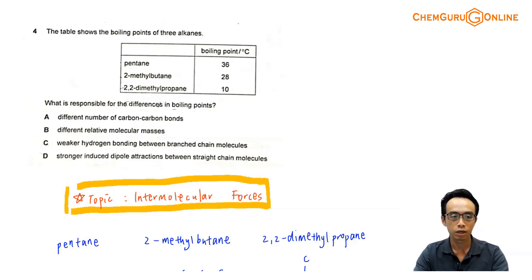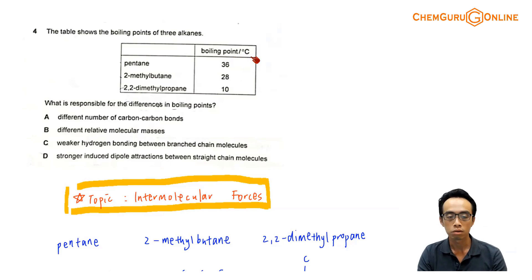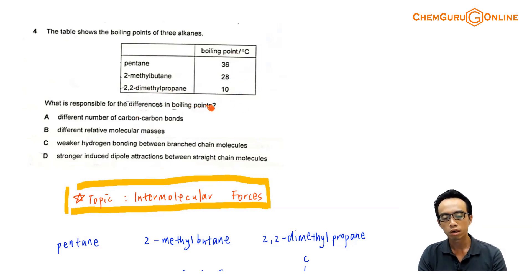Let's take a look at question 4. The table shows the boiling points of 3 alkanes: pentane at 36°C, 2-methylbutane at 28°C, and 2,2-dimethylpropane at 10°C. So what is responsible for the differences in boiling points for these 3 alkanes?